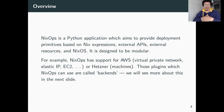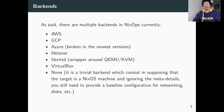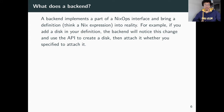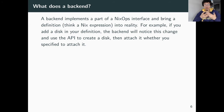One thing I like about NixOps is that it's super modular, meaning you can write backends for whatever you want as long as you have an API. For example, there are backends for Amazon Web Services, Google Cloud, Azure, Hetzner, Linode, VirtualBox, and it supports trivial NixOS machines with an SSH server. A backend is basically a plugin that implements part of the NixOps interface and brings a definition — think Nix expressions — like a disk resource, into reality.